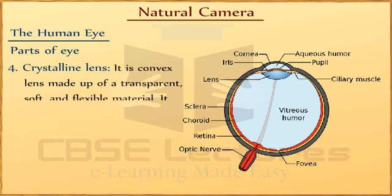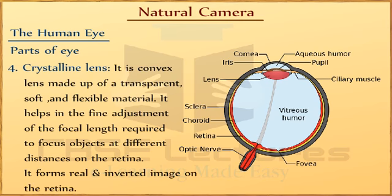Fourth, Crystalline Lens. It is a convex lens made up of transparent, soft, and flexible material. It helps in the fine adjustment of the focal length required to focus objects at different distances on the retina. Being convex in nature, it forms a real and inverted image on the retina.